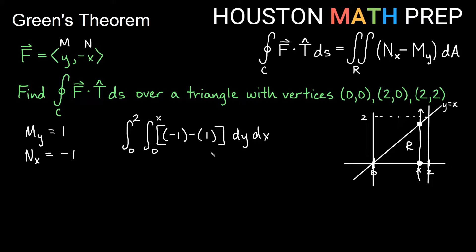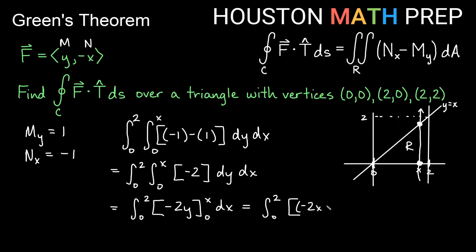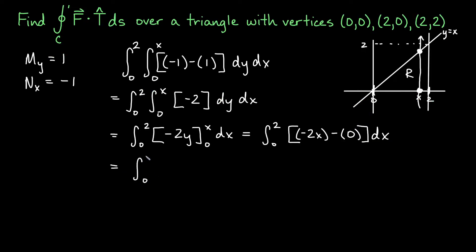We integrate from 0 to 2 dx, with inner integral from 0 to x of −2 dy. Integrating −2 with respect to y gives −2y, evaluated from 0 to x: plugging in x gives −2x, minus plugging in 0 gives 0. So we're integrating from 0 to 2 of −2x dx.